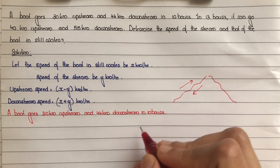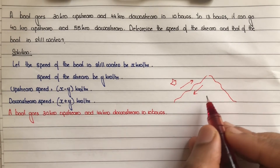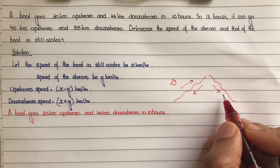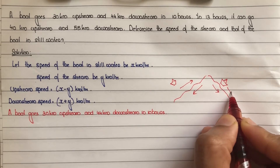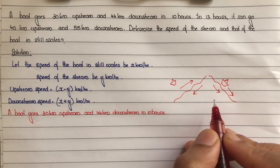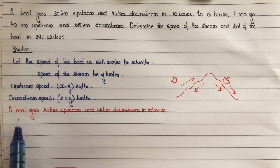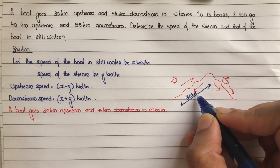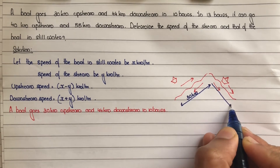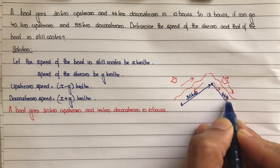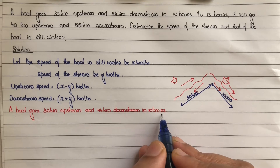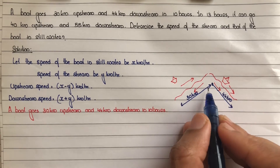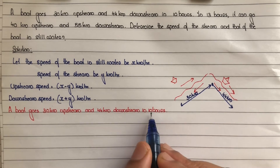For example, in this case the stream flows in the downward direction. When the boat moves opposite to the stream's flow, that is called upstream. When the boat moves in the same direction as the stream's flow, that is called downstream. The boat goes 30 km upstream and 44 km downstream, so the distance upstream is 30 km and downstream is 44 km, in 10 hours.